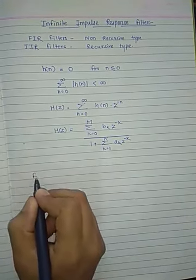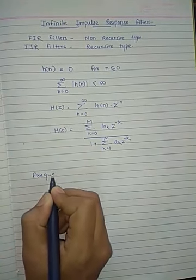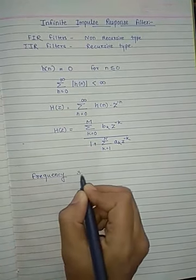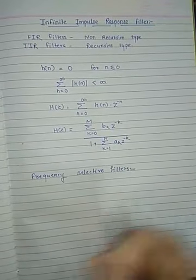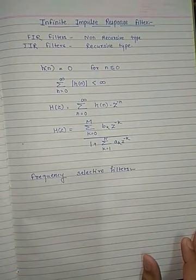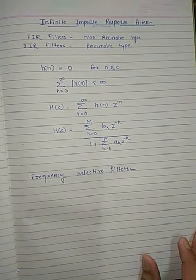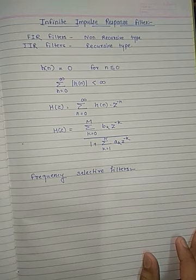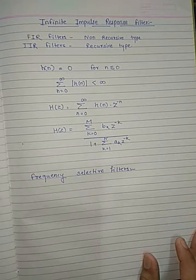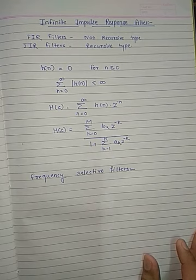Now we are going to see frequency selective filters. A filter is the one which rejects the unwanted frequencies from the input signal and allows the desired frequencies only. The range of frequencies passed through the filter is called the pass band, and those frequencies that are blocked are called the stop band frequencies.